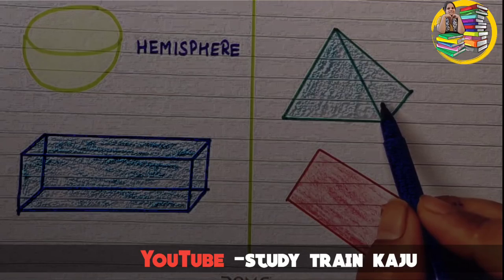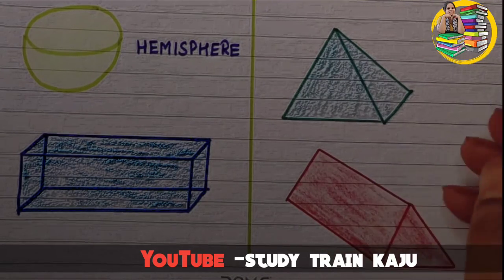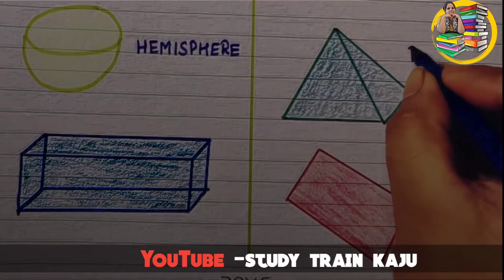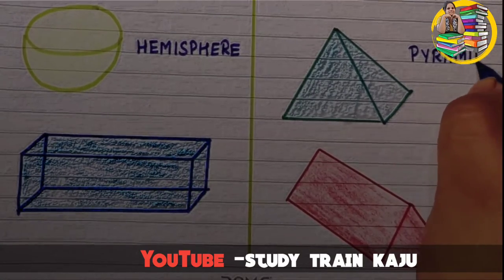The next shape is pyramid shape. This looks like a pyramid. P-Y-R-A-M-I-D. Pyramid.